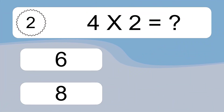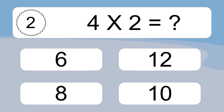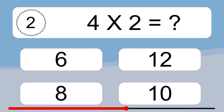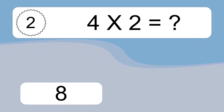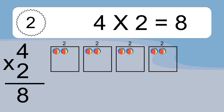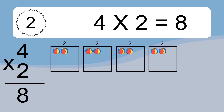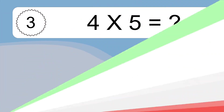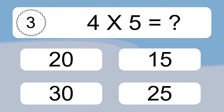4 times 2 equals what? We have 4 boxes, and each box has 2 colorful balls inside. If you count all the balls in all the boxes together, you will have 4 times 2 balls. This equals 8 balls. 4 times 5 equals what?